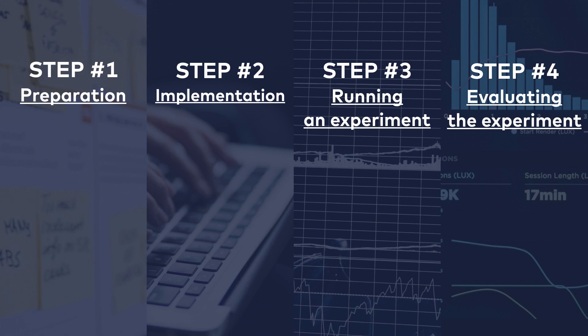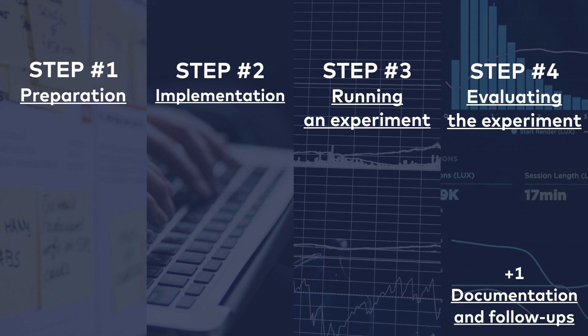We went through the four steps of executing an A-B test: preparation, implementation, running an experiment, and evaluating the experiment. But before we finish this module, we have to discuss two more things that you should take care of after finishing your A-B test. These are documentation and following up on your results.